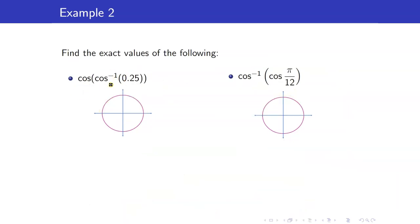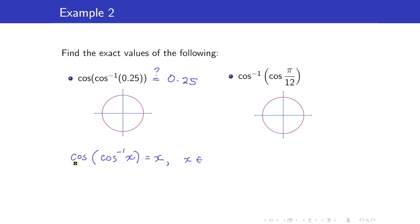Next, let us evaluate cosine of cosine inverse 0.25. Can we cancel? We use the property: cosine of cosine inverse x equals x, which holds when x is in the range of cosine, i.e., negative 1 to 1. Since 0.25 is an element of negative 1 to 1, therefore cosine of cosine inverse 0.25 equals 0.25.